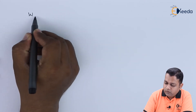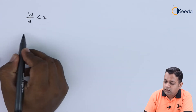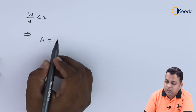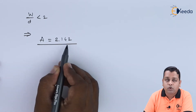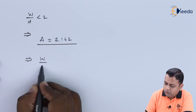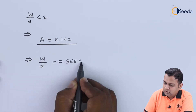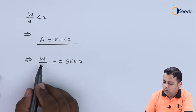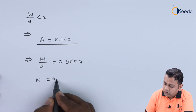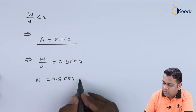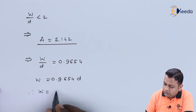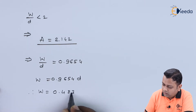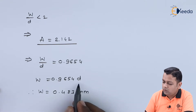Assuming first the condition w/d less than 2, the computation gives A = 2.142. When capital A equals 2.142, it results in w/d = 0.9654. Since w = 0.9654 × d, and substituting d = 0.5 mm, we obtain w = 0.483 mm.